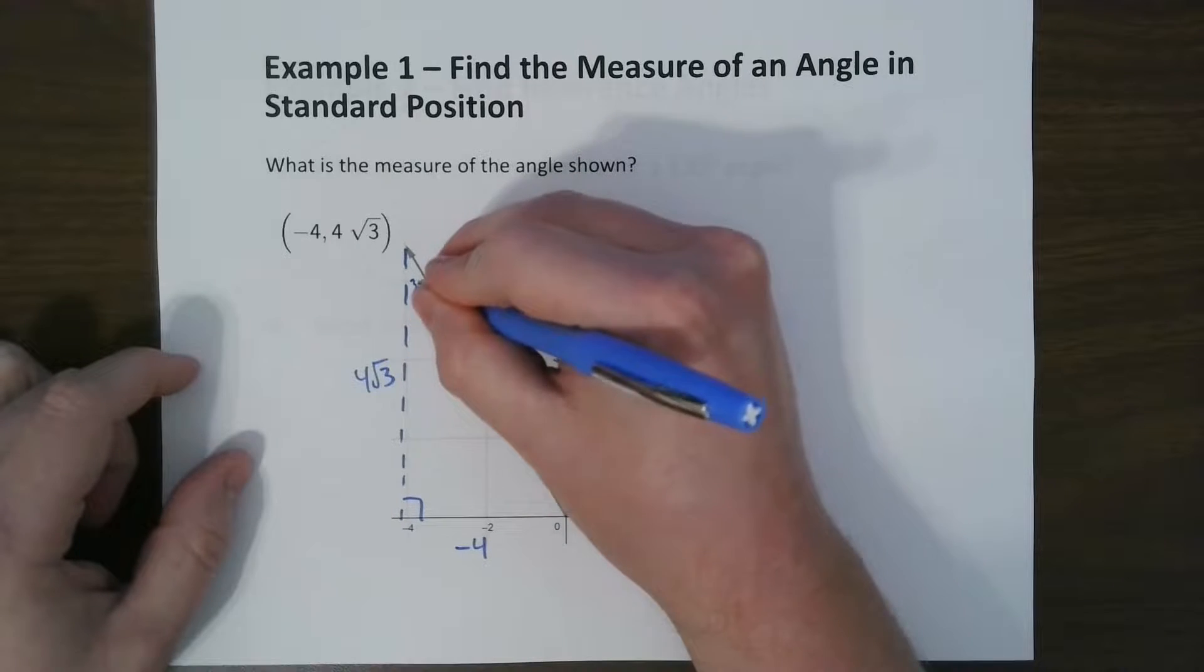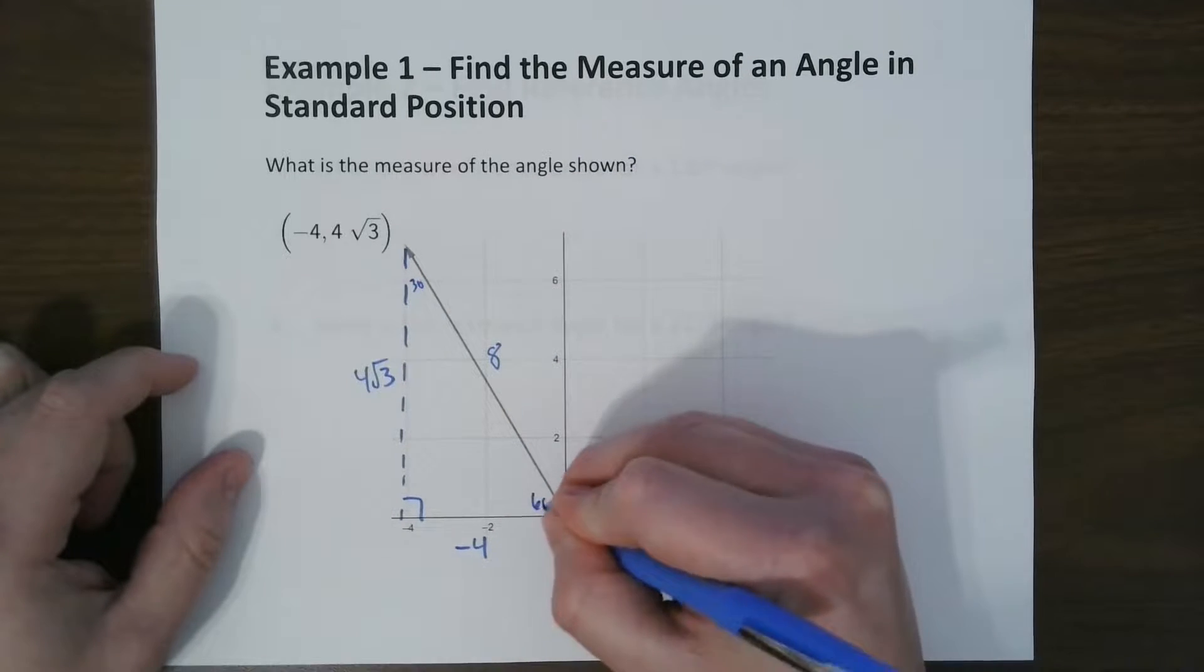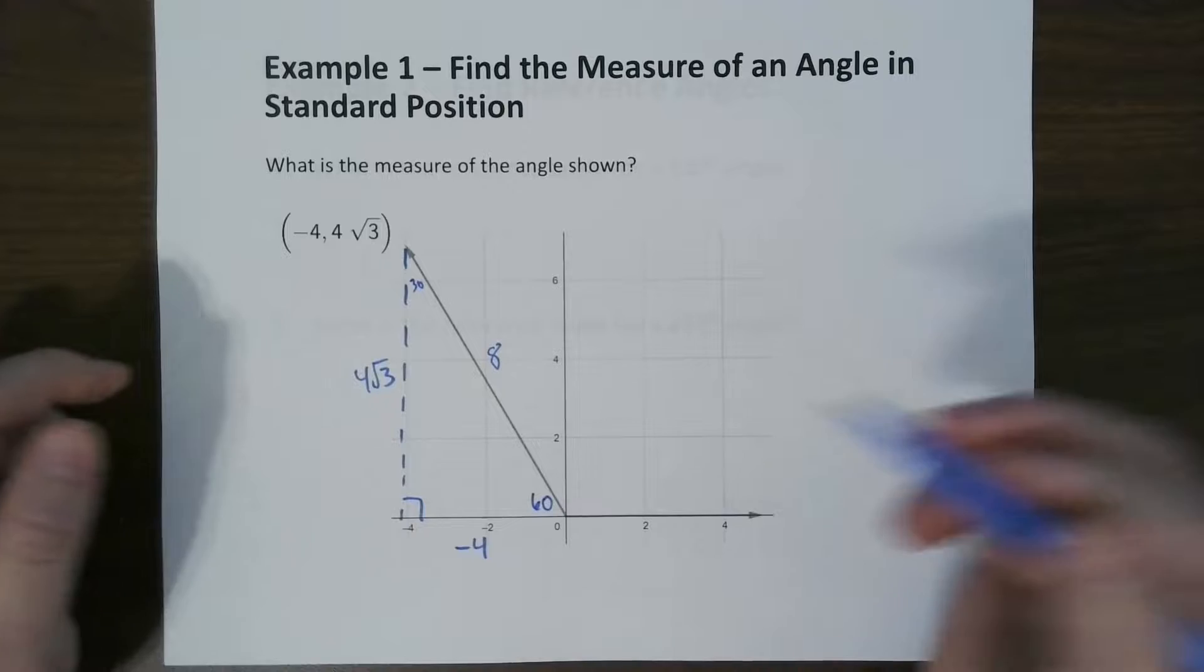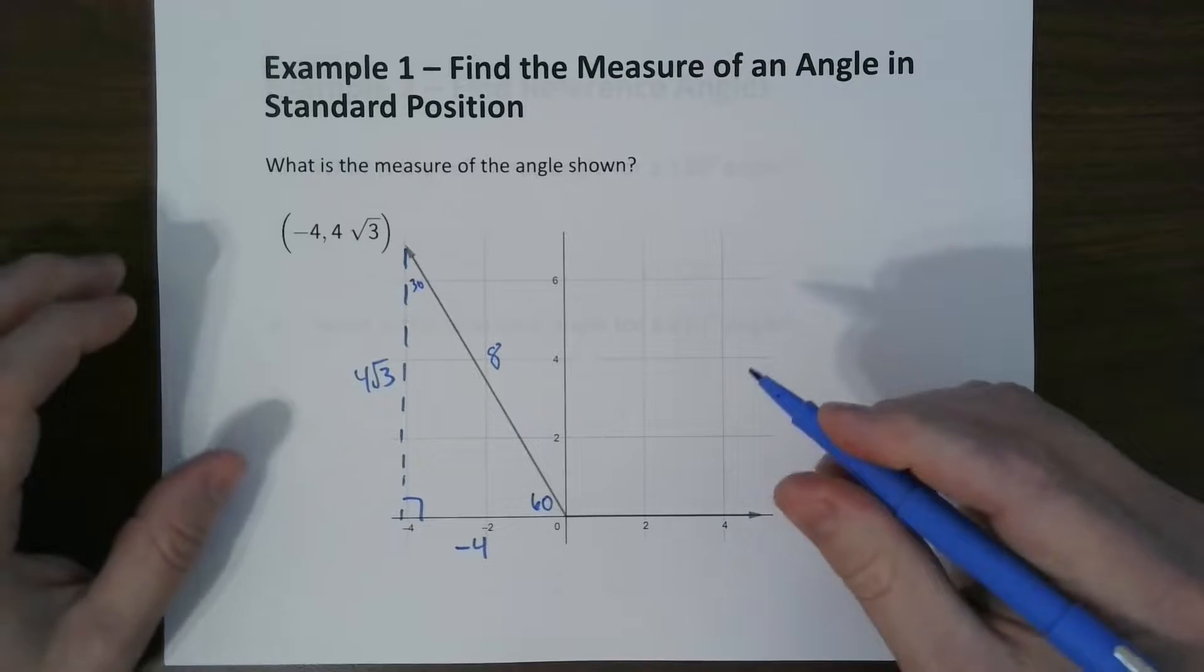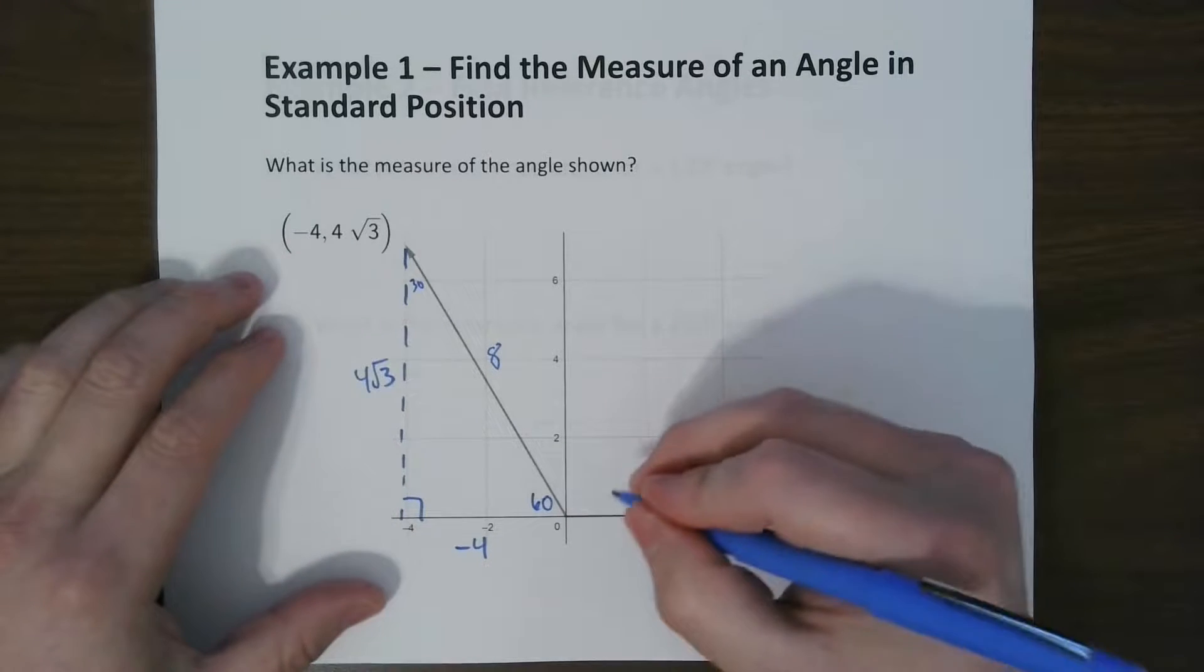So we know this is 30 degrees, so we know this is 60, because the 60 is always across from the radical. So knowing that, can we find the measure of this angle?